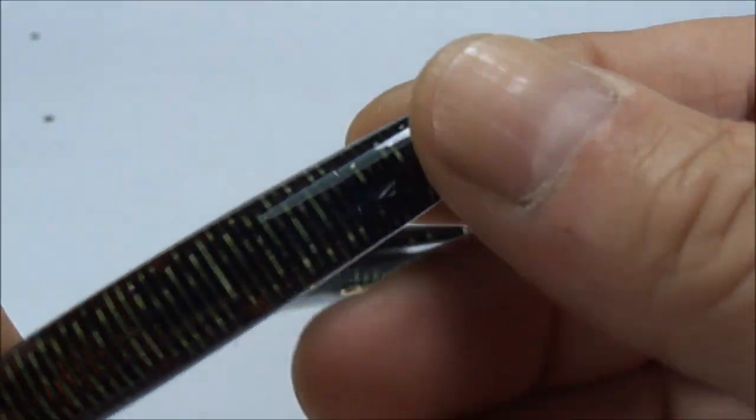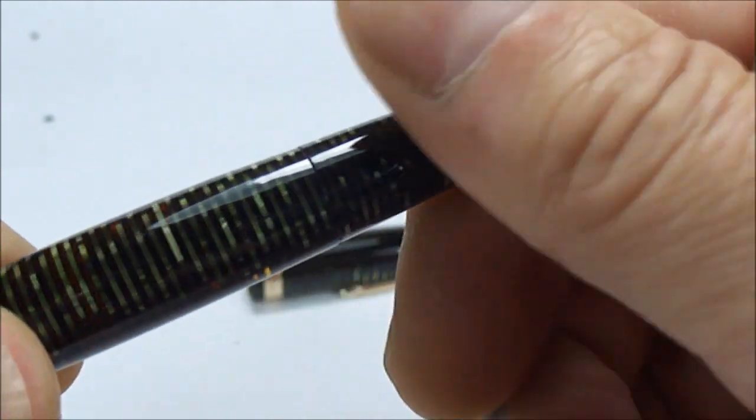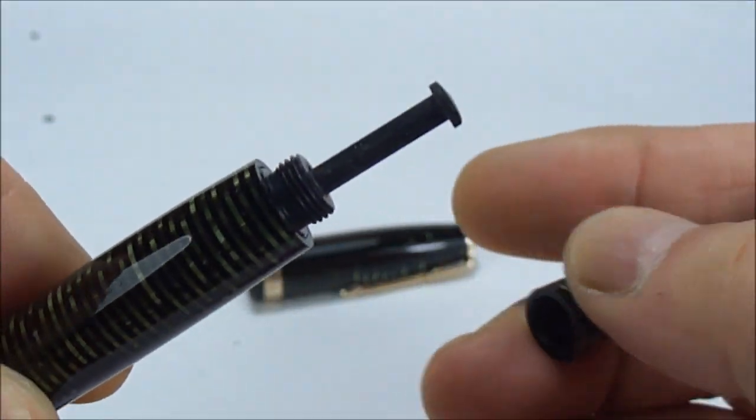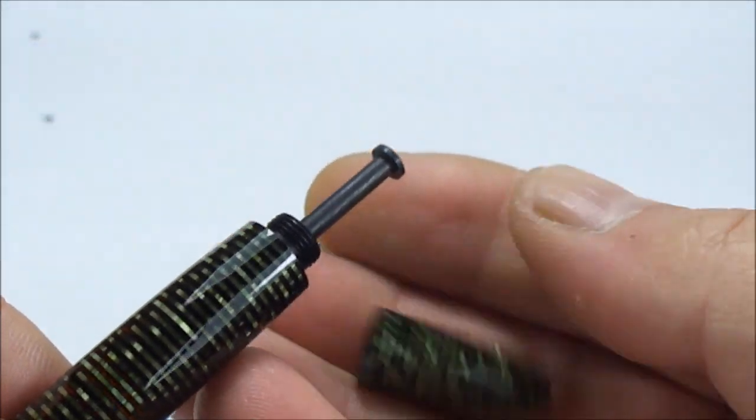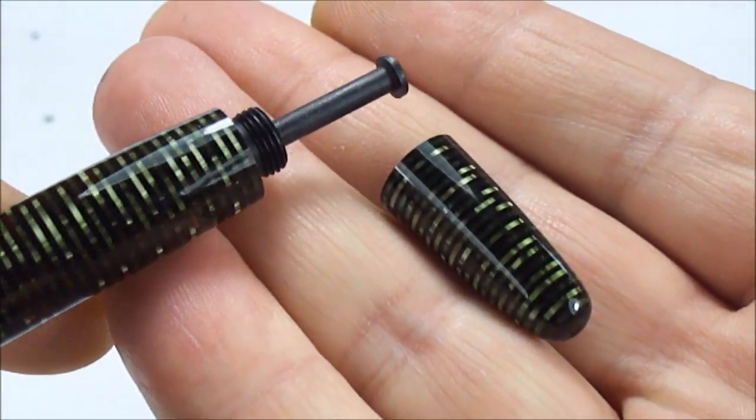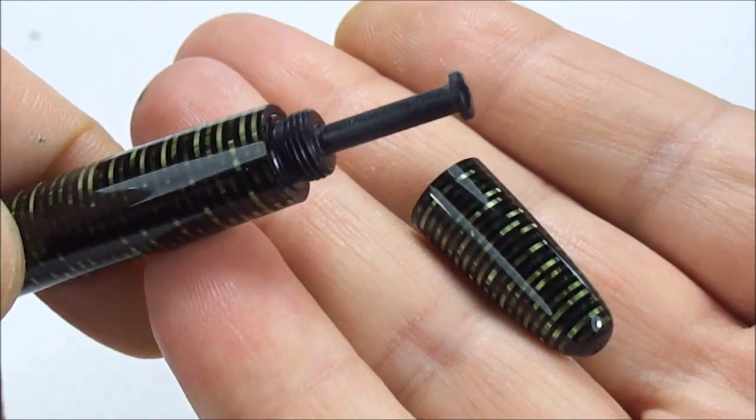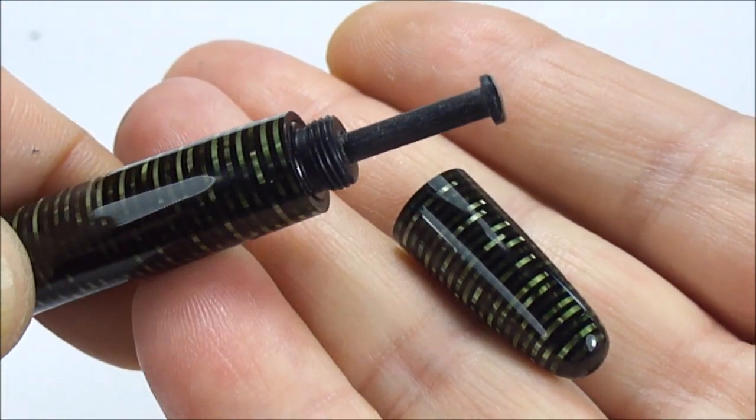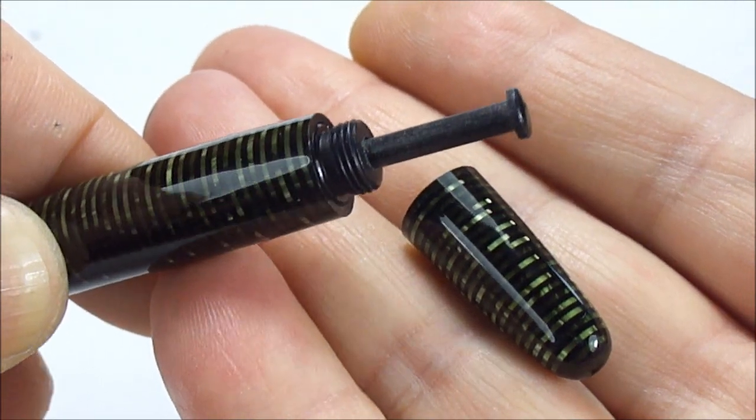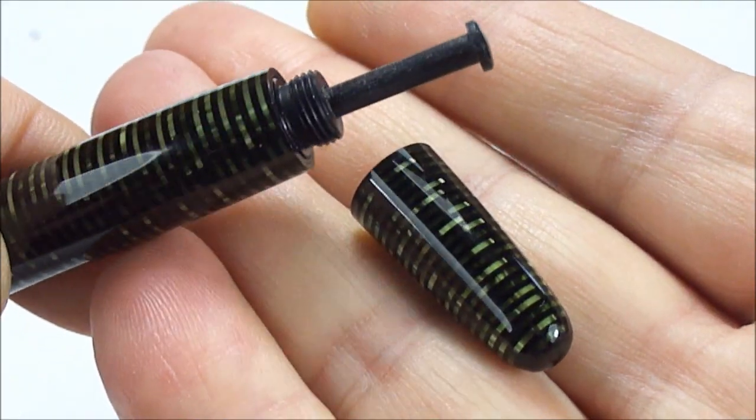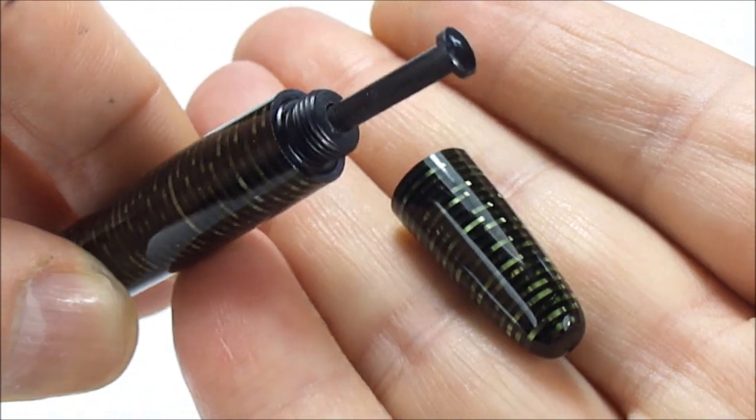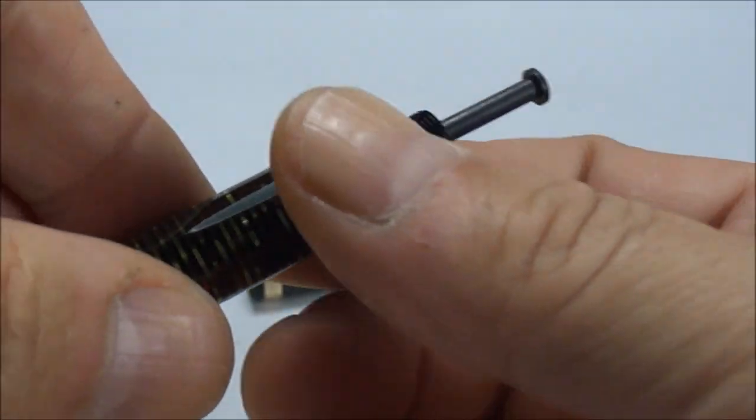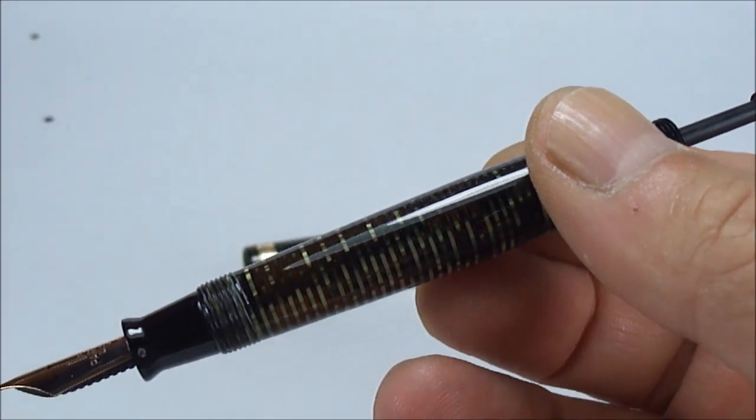So that's the Parker Vacumatic and again I believe this one to be a Major. As I say Vacumatic being the fact that what we actually do we actually unscrew the blind cap to the bottom of the barrel there and if we put them next to you'll see it's got the Vacumatic pump to the end there which incidentally I've actually removed it's all been cleaned inside there's a brand new diaphragm been fitted and it's in full working order says he.